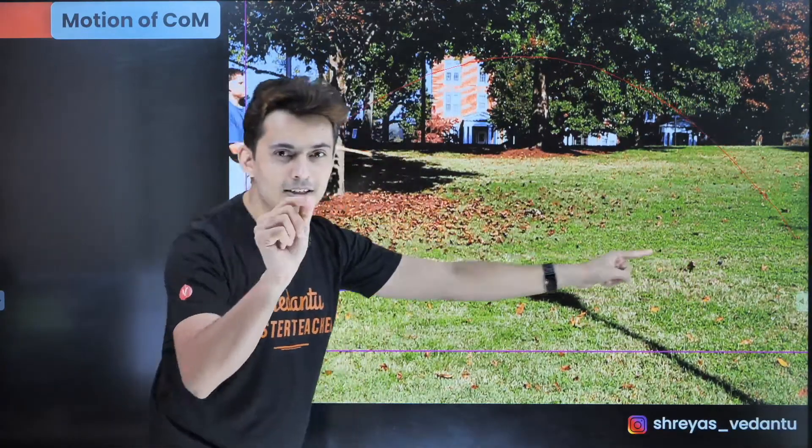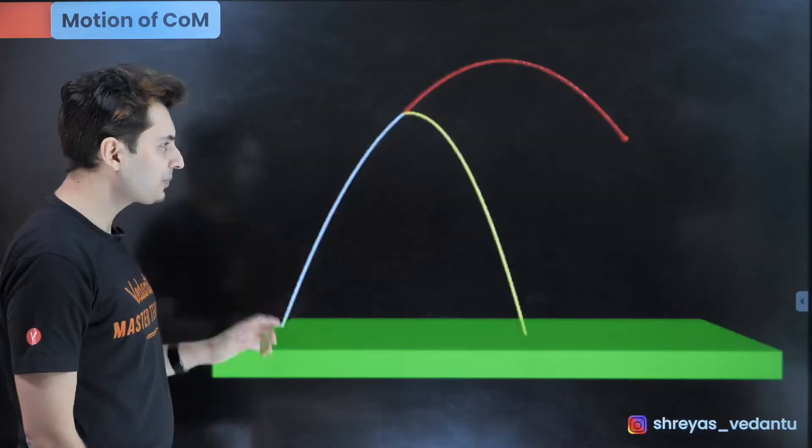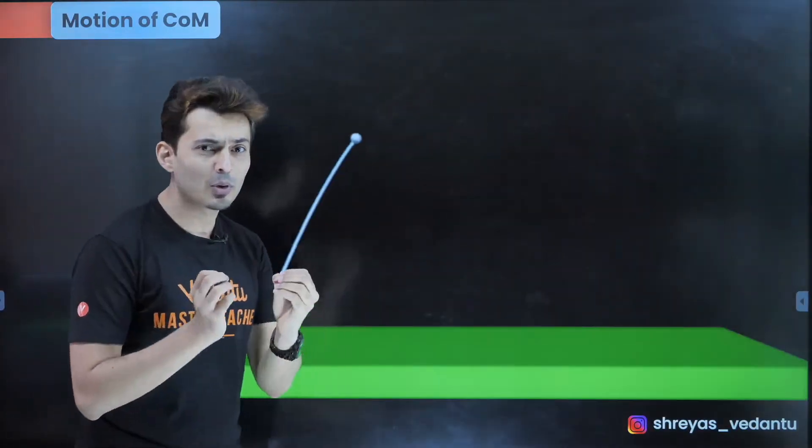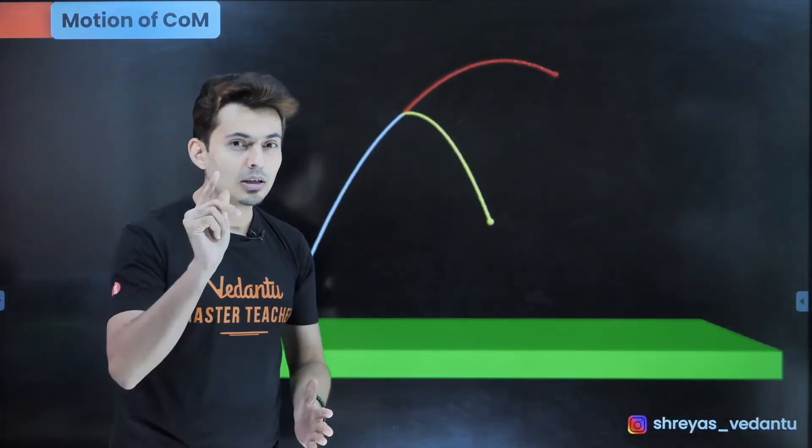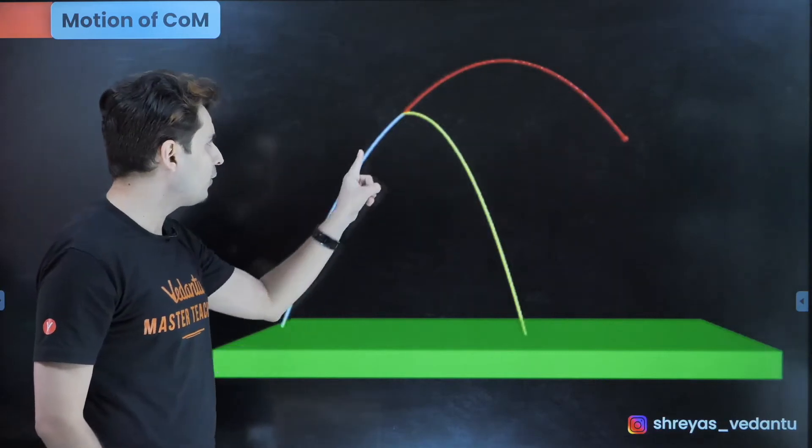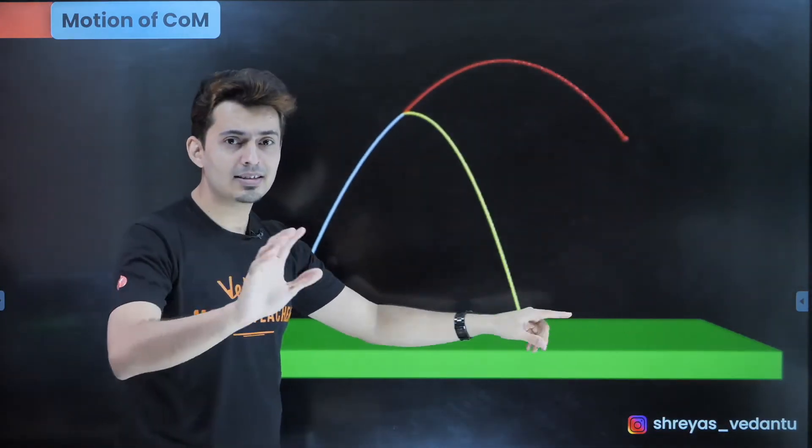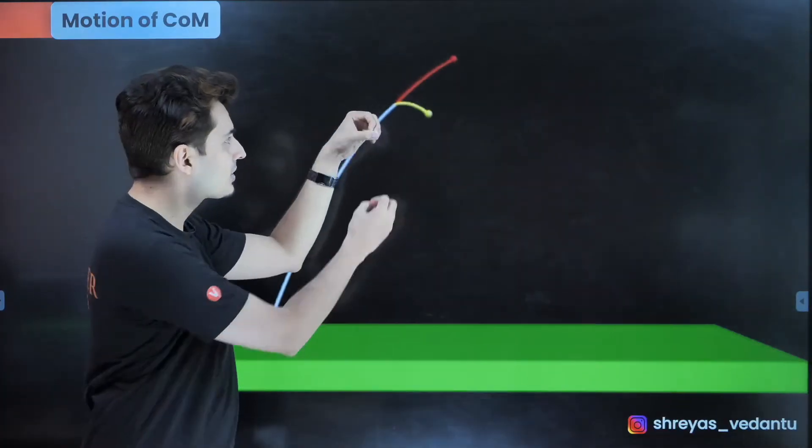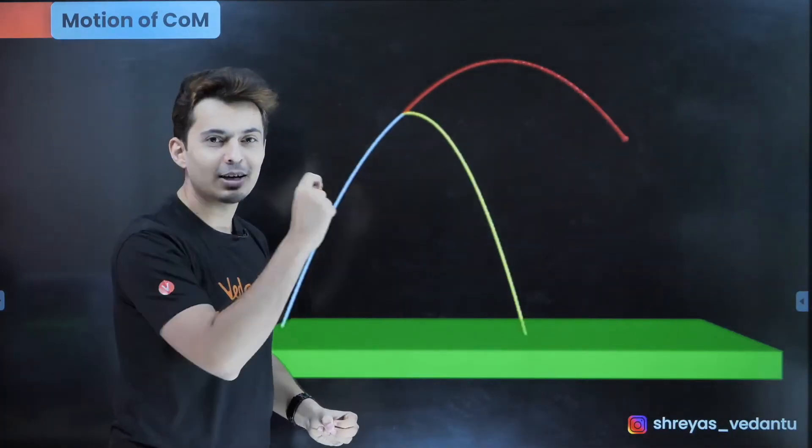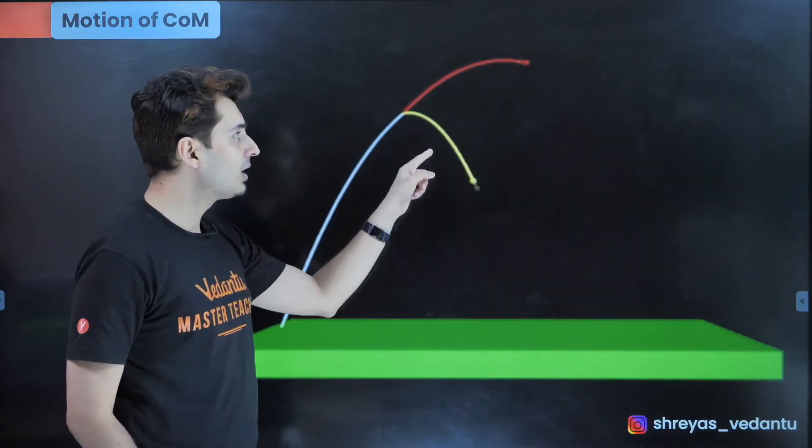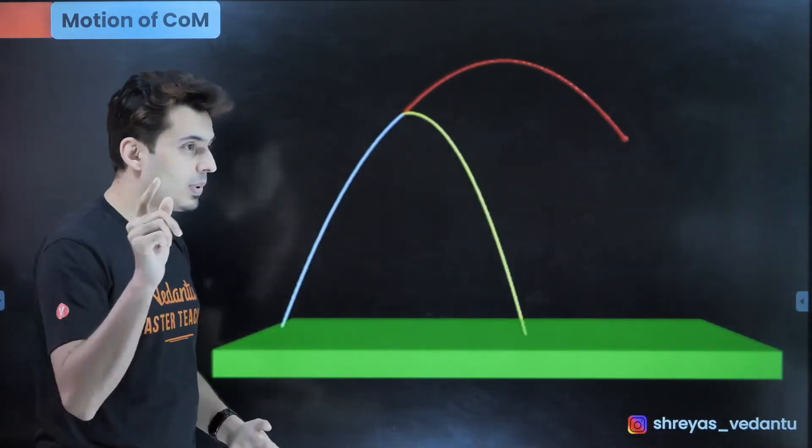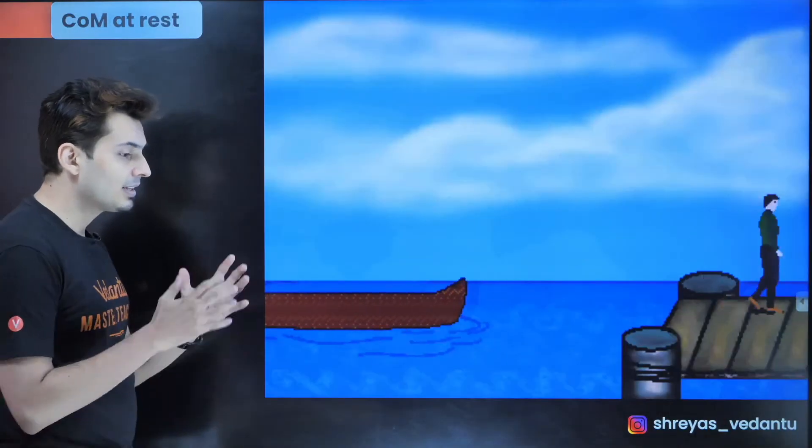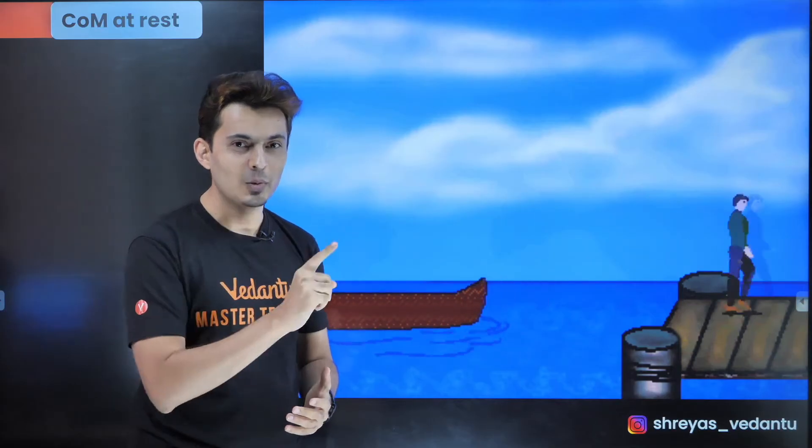Similarly if a projectile were to explode mid-air and different fragments will fall at different places you will still see that the center of mass will continue its journey as if nothing has happened. That's because the force of explosion is an internal force. That's how you can figure out the location of different fragments if the location of other fragments were known by you. Remember that when the net force is balanced then the acceleration of the center of mass is zero and that's how you solve the classic problem of man and the boat.